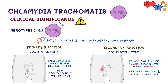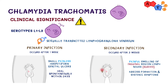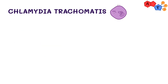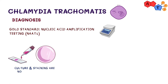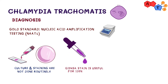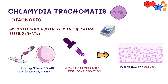The gold standard diagnosis for Chlamydia is nucleic acid amplification testing. Culture and staining are not done routinely, but Giemsa stain is very useful for identifying Chlamydia — you will see chlamydial inclusion bodies in the cytoplasm of epithelial cells.